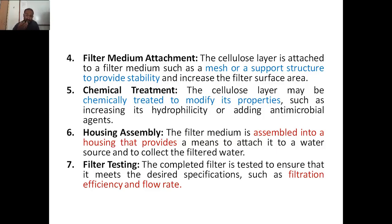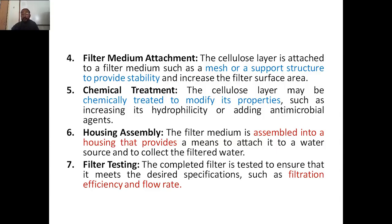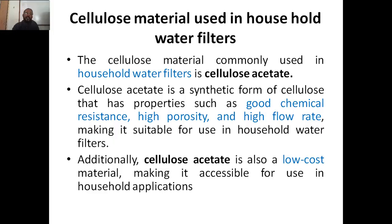Step 5 is chemical treatment — treat the layer with chemicals to increase hydrophilicity so more water can come into contact, and to add antimicrobial agents to kill any microbes present in the water. Step 6 is housing assembly — the filter medium is assembled into a housing that connects to the water source and collects the filtered water, like standard piping. Step 7 is filter testing — the completed filter is tested for filtration efficiency and flow rate to ensure it meets desired specifications.